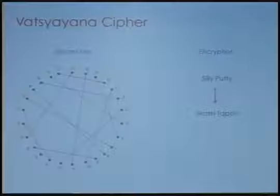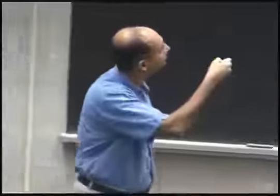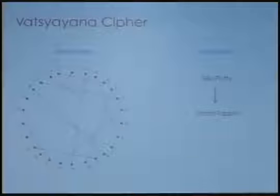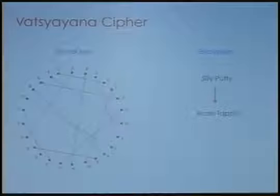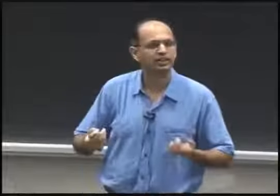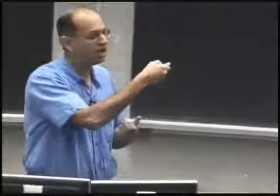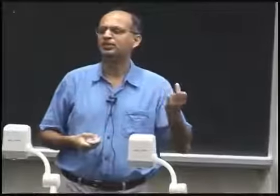When Bob receives the scrambled message, how does he decrypt it? He uses the same key — because they share the same secret key. To de-scramble, Bob looks at the A and knows it should be mapped back to S using the same key. He transforms each letter and recovers the original message. Alice and Bob share the secret key; no one else knows it. Presumably only Bob can de-scramble because only Bob knows the secret key.